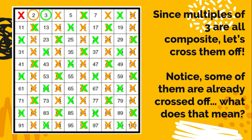Notice while you're doing that that some of them are already crossed off. Think about what does that mean? You might even want to write down a reflection about that, because that's going to be a reflection question later. What does it mean if some of them are already crossed off?